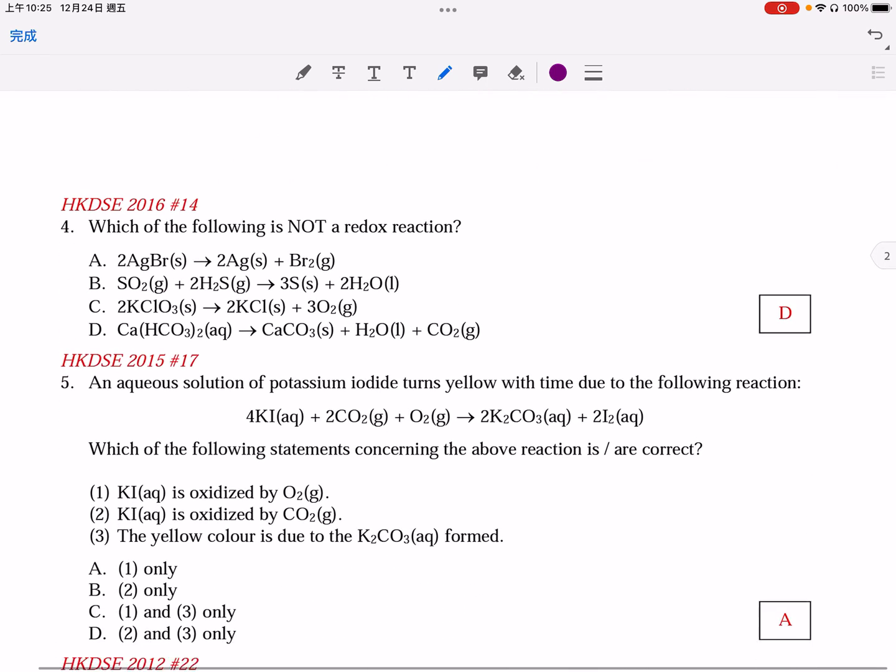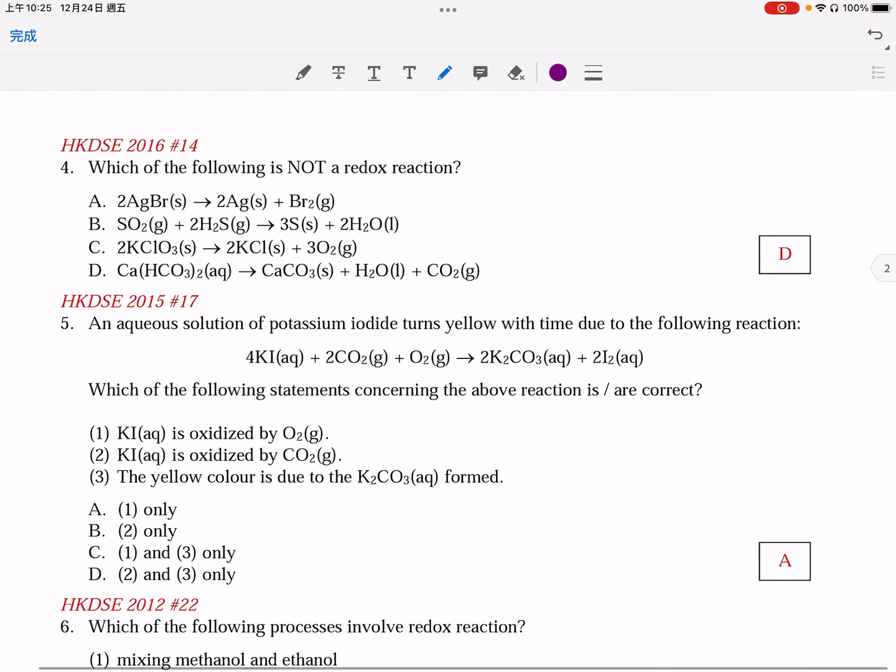Page 2. Which of the following is not a redox reaction? Not a redox. Of course, we try to calculate all the oxidation numbers involved. Silver, there is a change. Bromine, there is a change. So this is a redox reaction. In option B, sulfur from positive 4 to 0, and also from negative 2 to 0. This is again a redox.